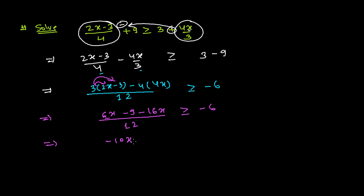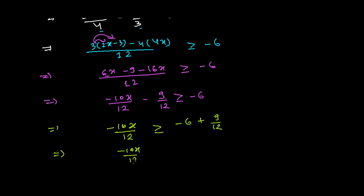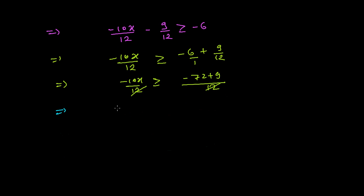Combining 6x and minus 16x gives minus 10x, divided by 12. We also have minus 9 divided by 12 on the left. Shifting the constant term to the right side, we get minus 10x over 12 is greater than or equals to minus 6 plus 9 over 12, which simplifies to minus 10x is greater than or equals to minus 63.